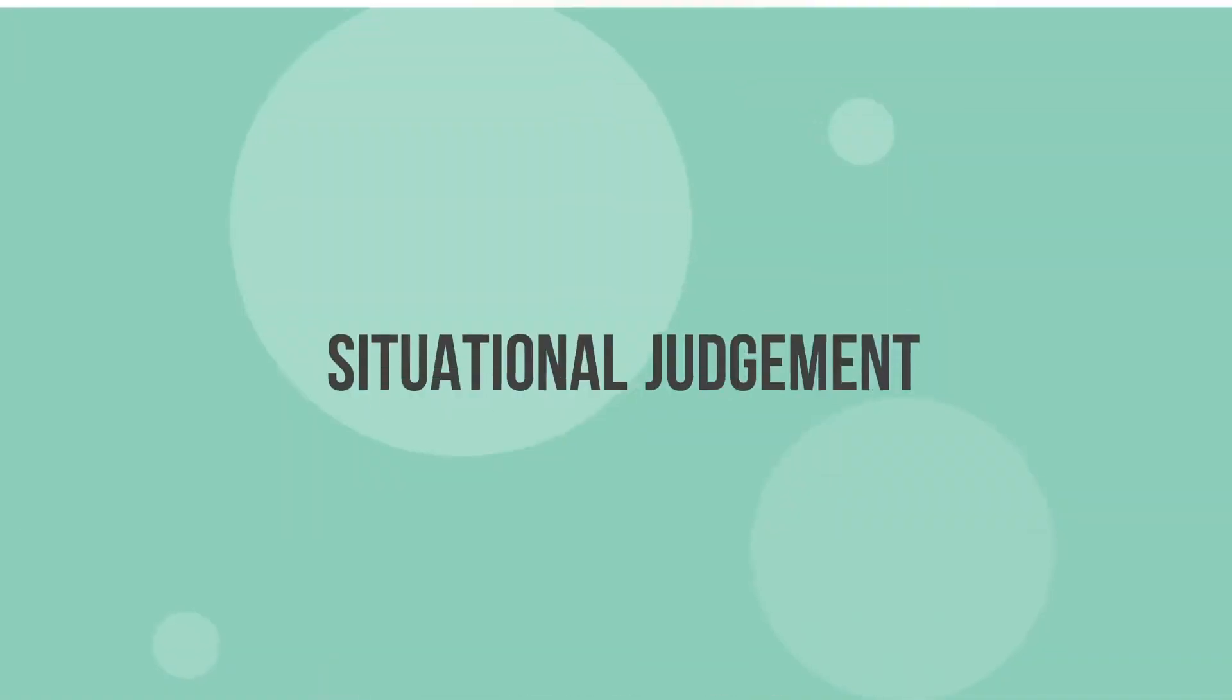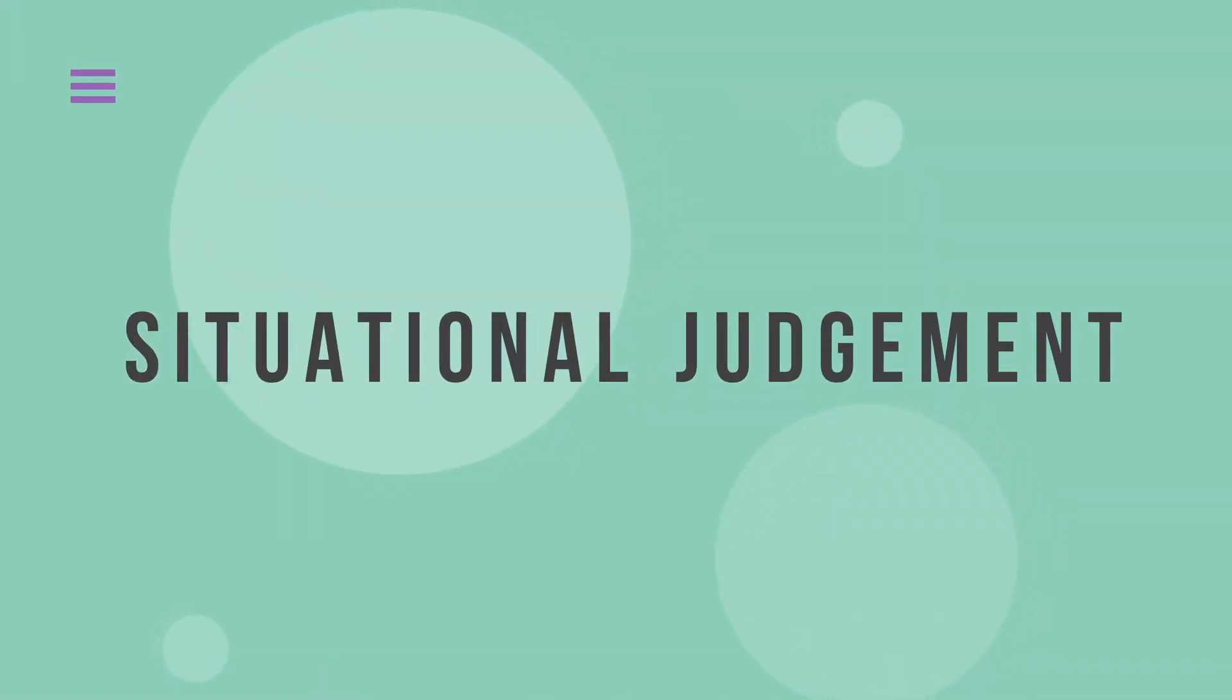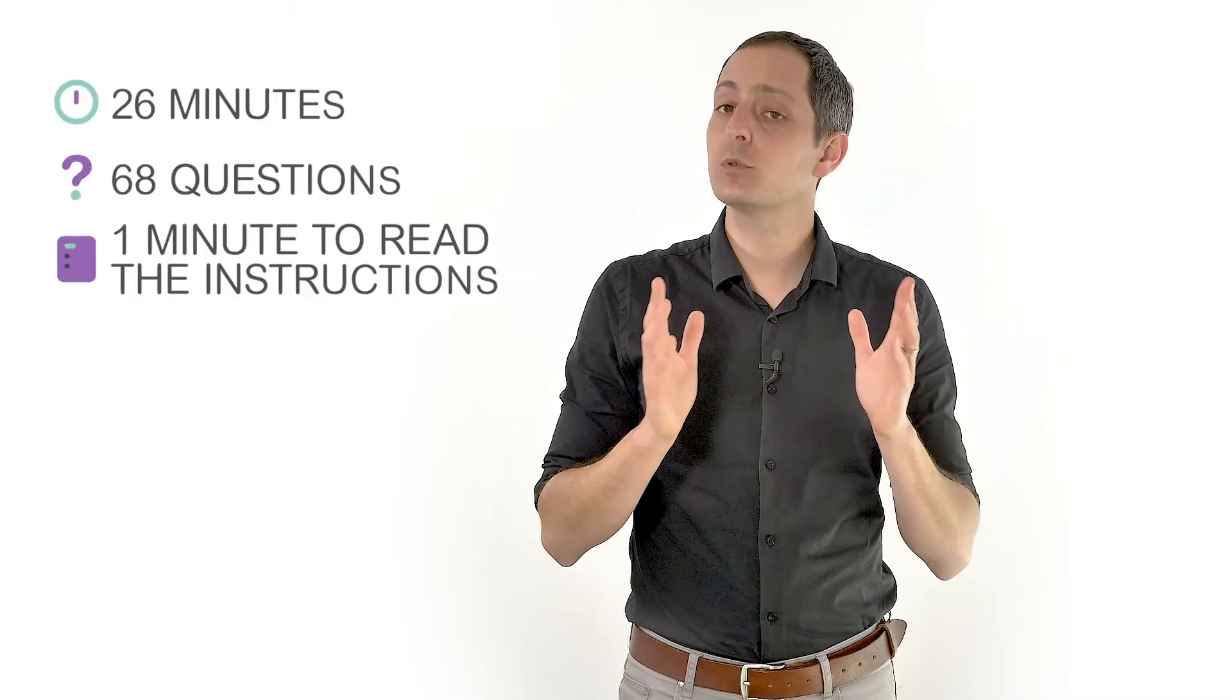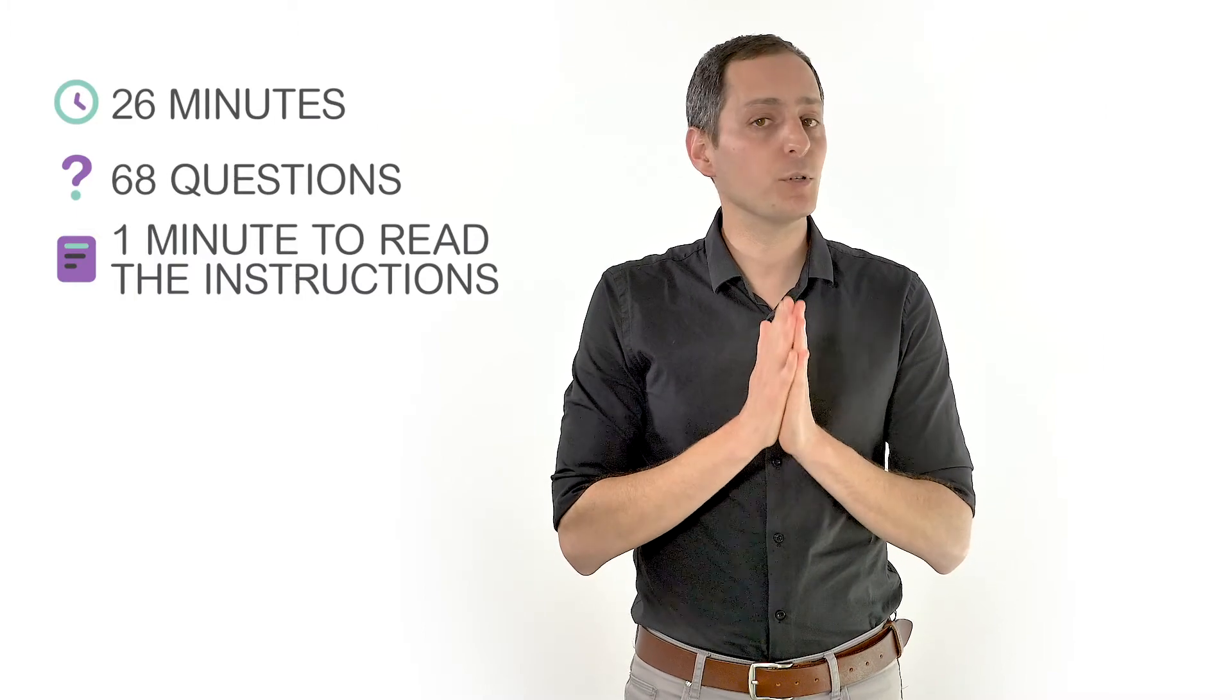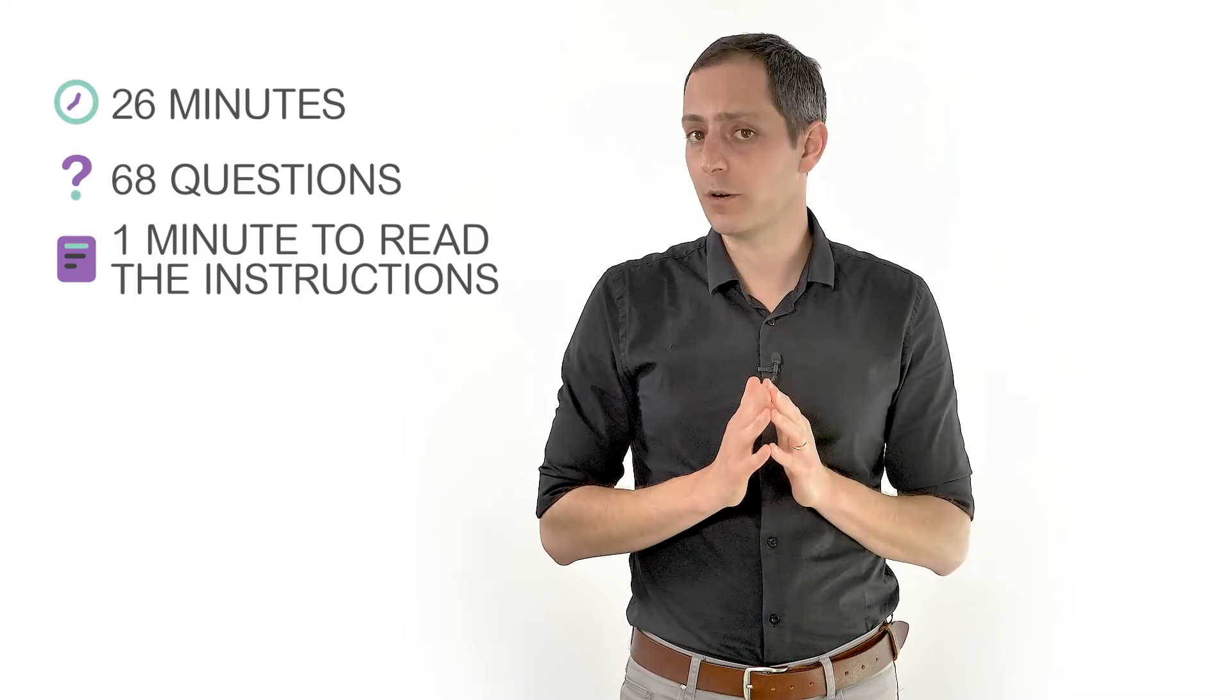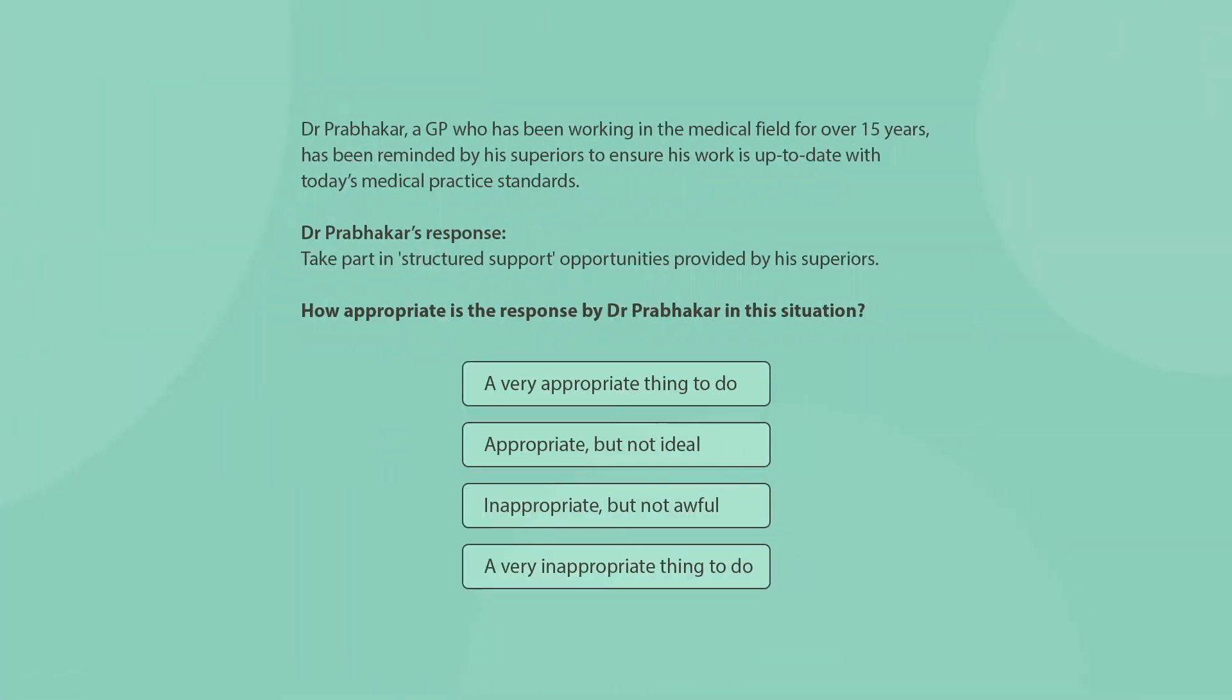Now, let's advance to the last UCAT subtest, the situational judgment test. The situational judgment section is used to find those with the most appropriate professional behaviors. These behaviors are considered essential for candidates to become successful in their new clinical careers. You'll have 26 minutes to read the instructions and answer 68 multiple choice questions related to 21 scenarios. Try this sample question.